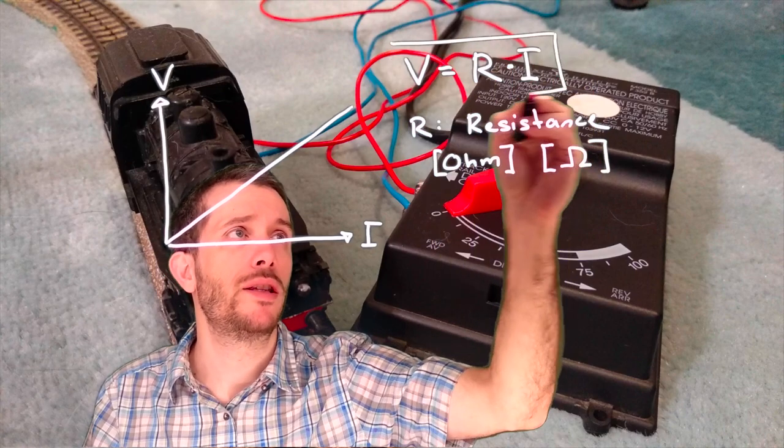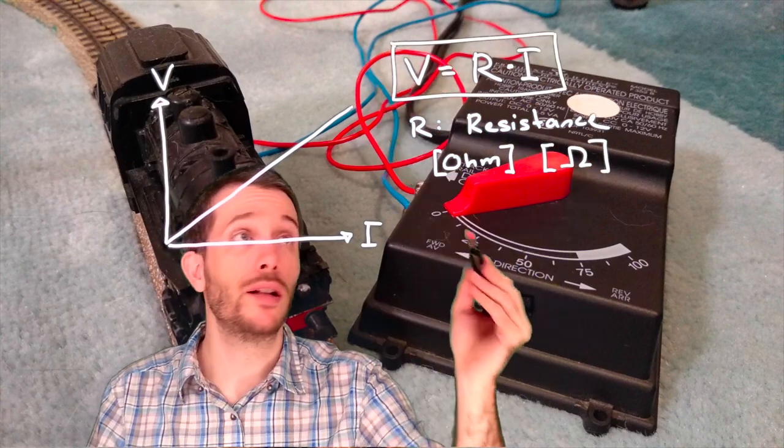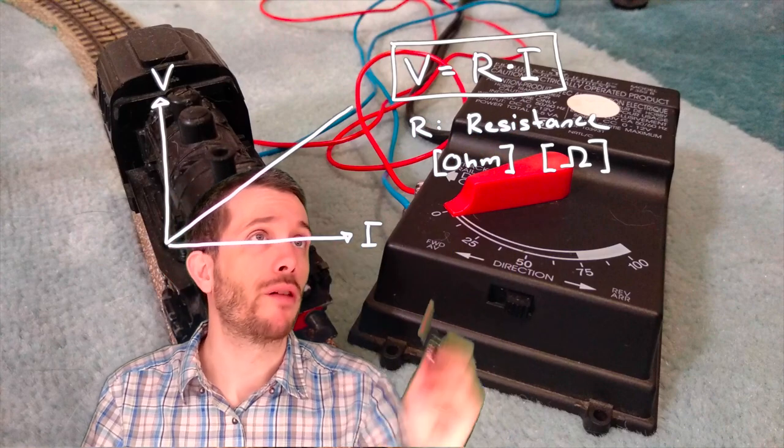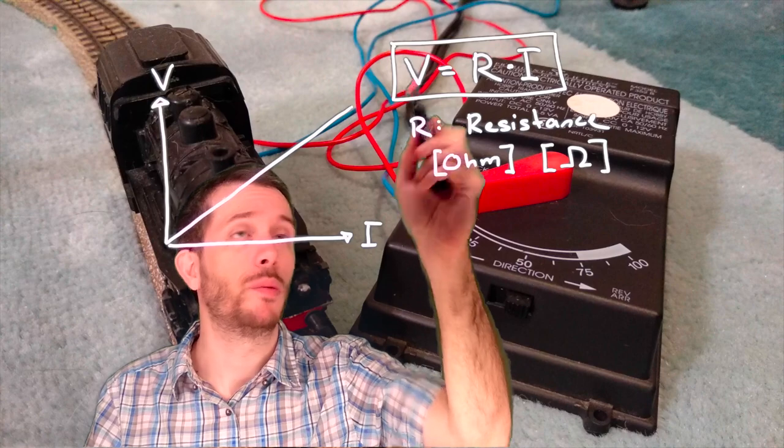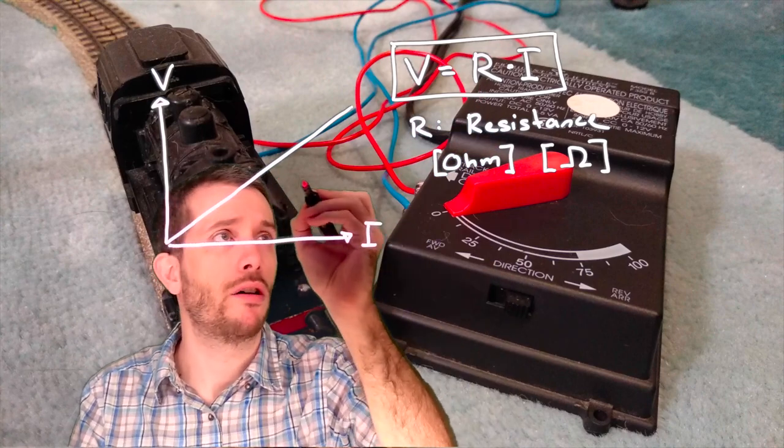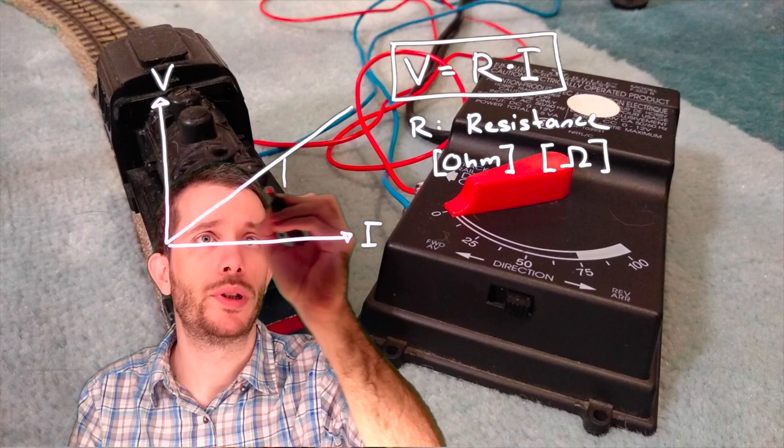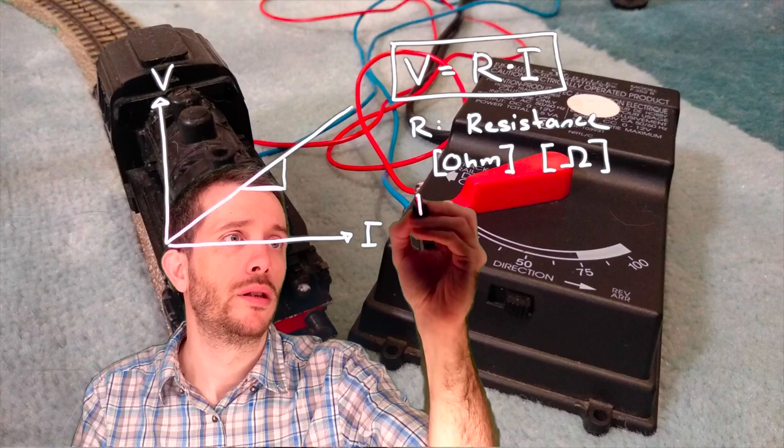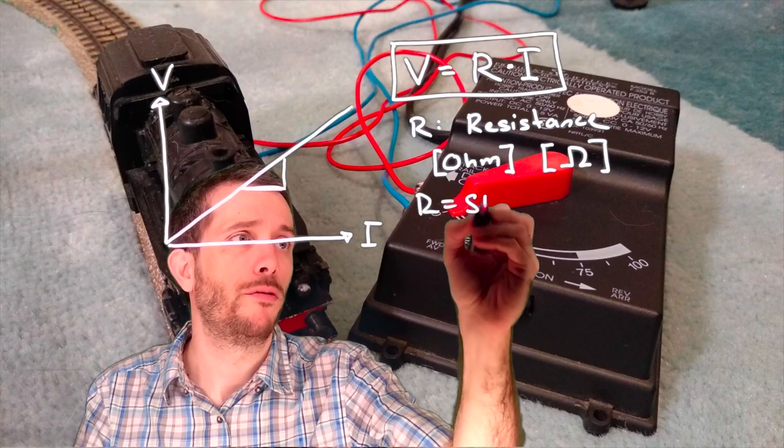And what does this relationship tell us? It tells us that as we observe from the graph, the more current we have, the more voltage we have. And that proportionality constant is the slope of my graph.